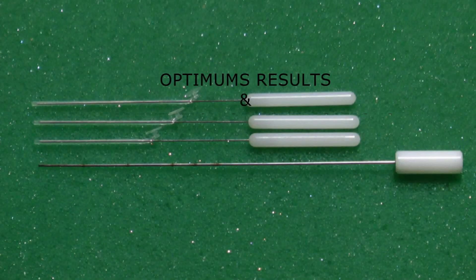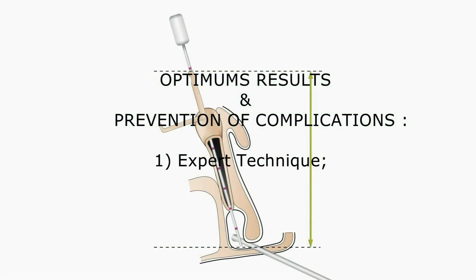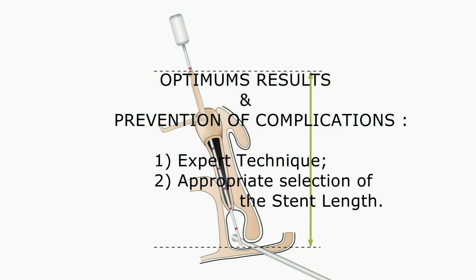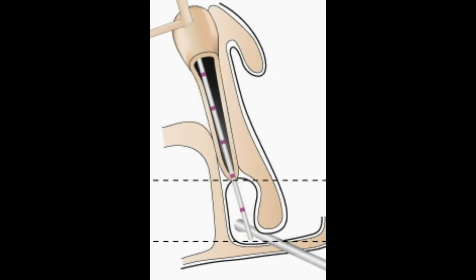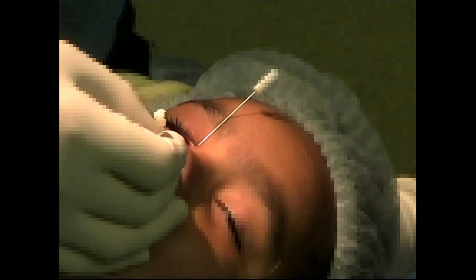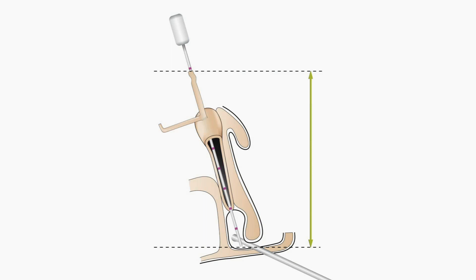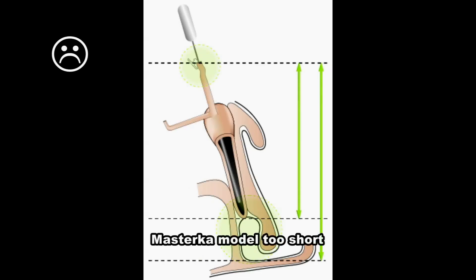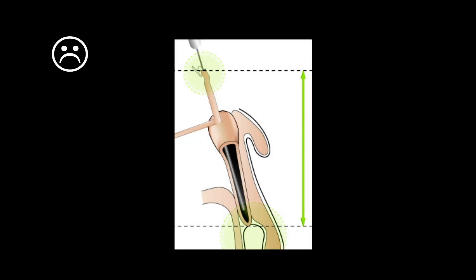Optimum results and the prevention of complications depend directly on expert technique and appropriate selection of the stent length. If metal-to-metal contact is not achieved in the nasal fossa, it is possible that a false passage may have been created. To avoid failure, one should restart the procedure from the beginning. If metal-to-metal contact is still not achieved, it is better to change the method of intubation altogether or to postpone the procedure for a later date. It is also possible that the stent model selected may be too short if the fixation plug is already in the punctum while the stent has not yet reached the site of mucosal stenosis.